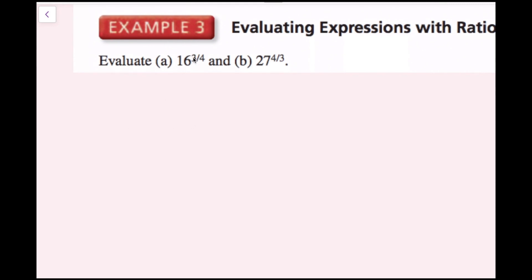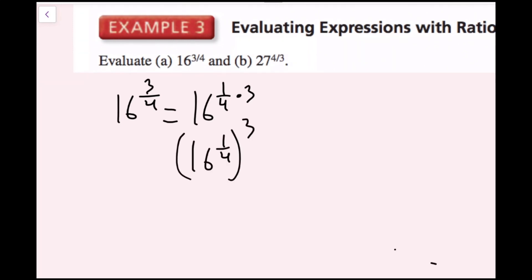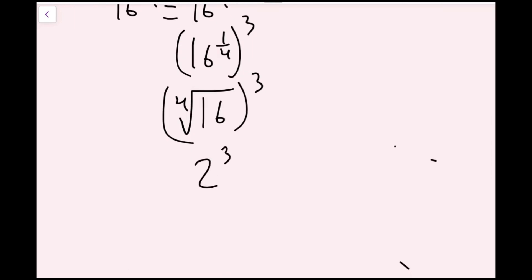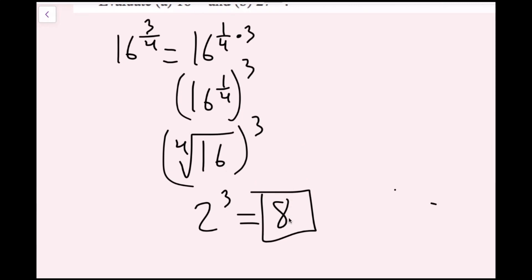For example 3, part a: evaluate 16 to the 3/4 power. Rewrite 3/4 as 1/4 times 3, so this becomes 16 to the 1/4, all to the third power. Rewrite 16 to the 1/4 as the fourth root of 16, which equals 2. So the expression becomes 2 cubed, which equals 8. Therefore, 16 to the 3/4 power equals 8.